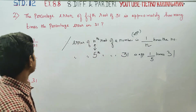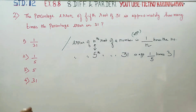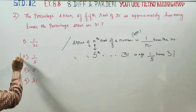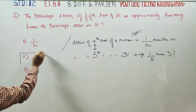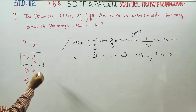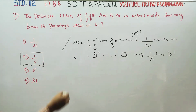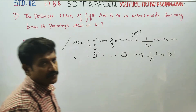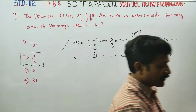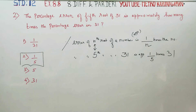You can see the best option — the second is the best option. The answer is 1 by 5 times 31. The percentage error of a number gives 1 by n times, and the 5th root gives 1 by 5 times. Thank you.